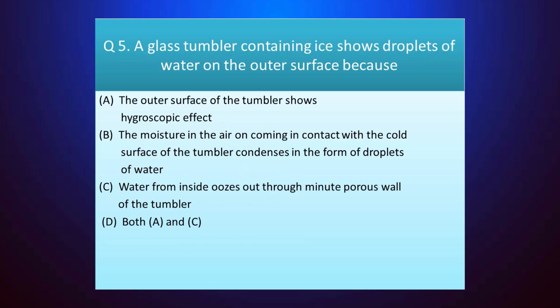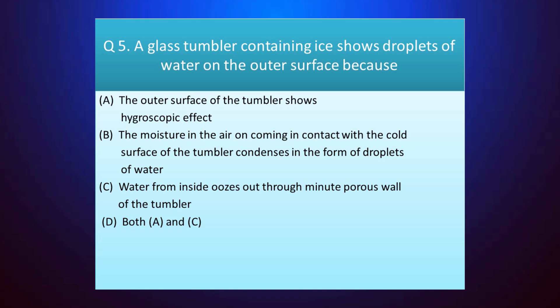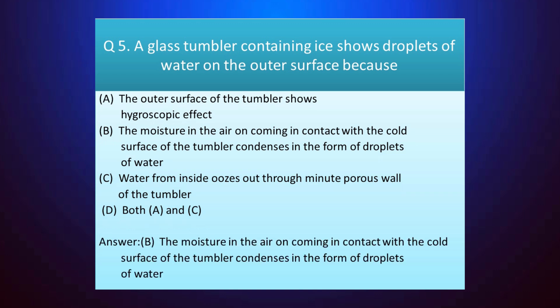Question number five: a glass tumbler containing ice shows droplets of water on the outer surface. Your time starts. The answer is option B — the moisture in the air, on coming in contact with the cold surface of the tumbler, condenses in the form of droplets of water.